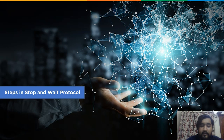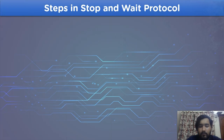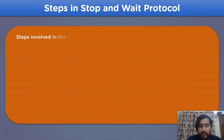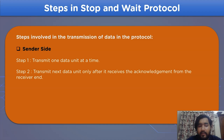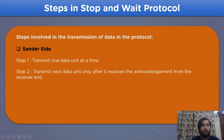The steps involved in the stop-and-wait protocol are divided into two parts: sender and receiver protocol. On the sender side, the first step is to transmit one data unit at a time to the receiver end. The next step is to transmit the next data unit only after receiving the acknowledgement from the receiver end.